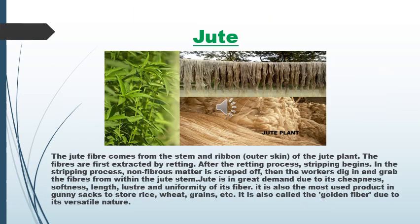Jute is also a natural fiber obtained from a plant. The jute fiber comes from the stem and outer skin of the jute plant. A thick, rough cloth is made from jute. Jute is in great demand due to its cheapness, softness, length, and uniformity of its fiber. It is also the most used product in gunny sacks to store rice, wheat, grains, etc.